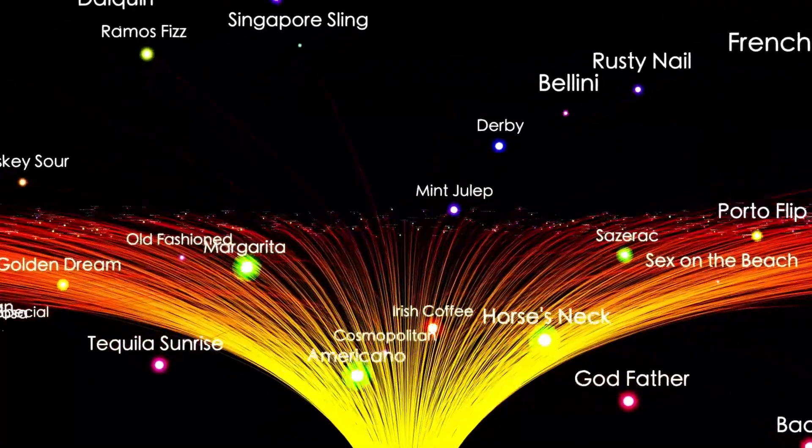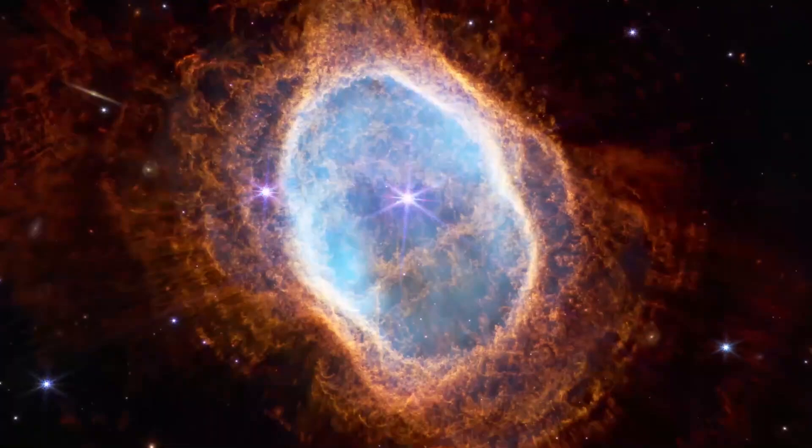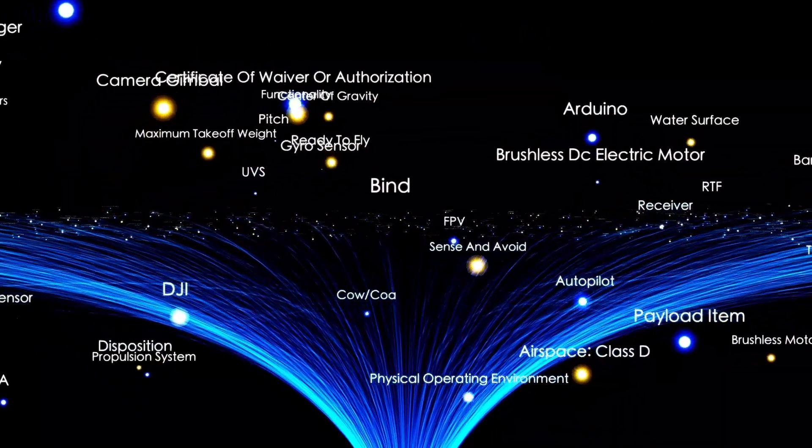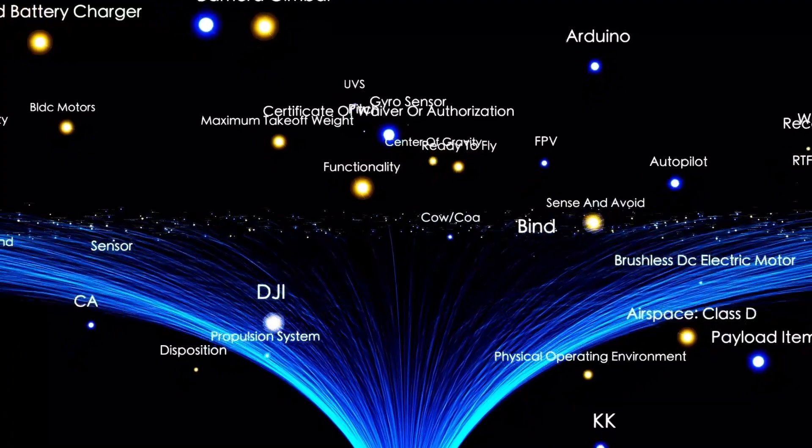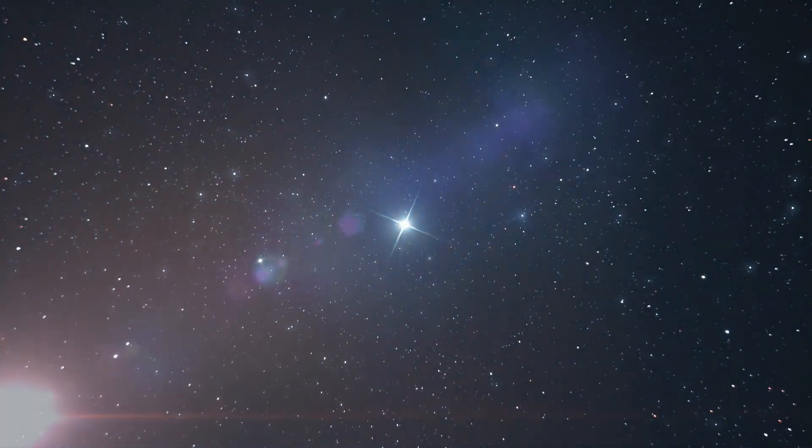Betelgeuse has been detected moving through the interstellar medium at a speed of 30 kilometers per second after being ejected from its place of origin in the Orion OB-1 Association, which contains the stars of Orion's belt. Its shock arc extends more than four light years.